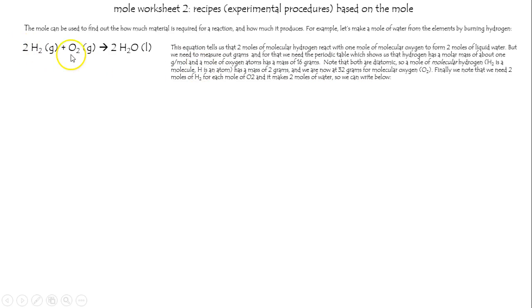both are atomic, so we're going to need four grams of this and 32 grams of that. And I'm going to skip to here. Finally, we note that we need two moles of hydrogen for each mole of oxygen, so we're making two moles of water, which we write it below. There's the amounts you need to mix.